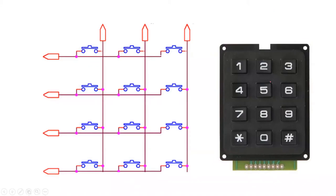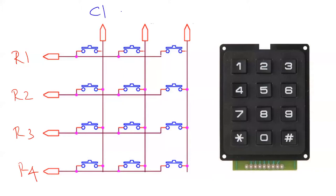This is the anatomy of the keypad. It essentially has 12 keys and 4 rows — row 1, row 2, row 3, and row 4 — and 3 columns: C1, C2, and C3. We need one pin from the microcontroller to connect to each of the 4 rows and 3 columns, so we need totally 7 pins.